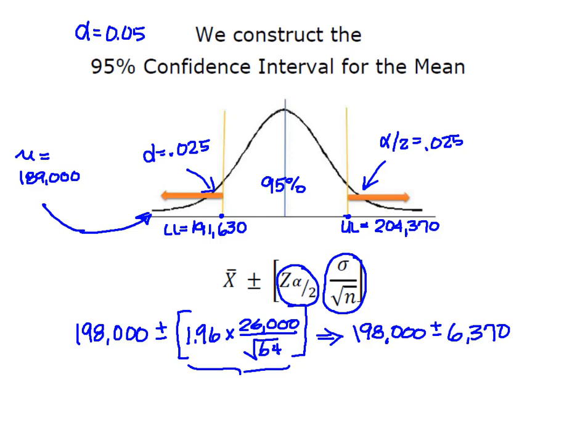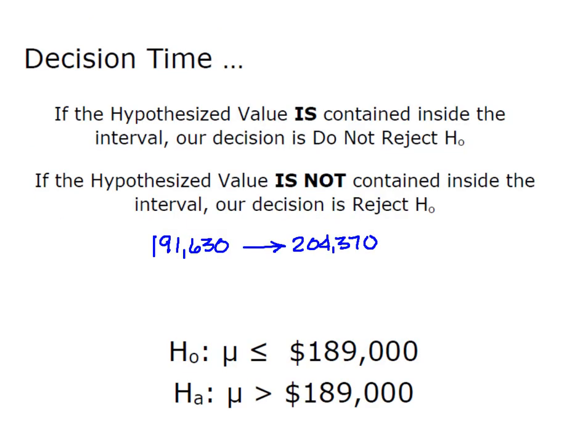Let's make that final decision. When we're using a confidence interval approach if the hypothesized value is contained inside the interval then our decision is do not reject H0. But if our hypothesized value is not contained in the interval, in other words falls below the lower limit or above the upper limit, then our decision is to reject H0.